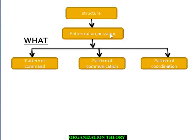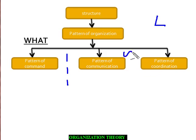Look, structure is a pattern of organization. For example, a line structure is a pattern of command — a linear pattern of command where communication is one-way and the coordination pattern is standardization. That is particularly how coordination is decided within that structure.